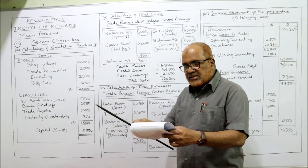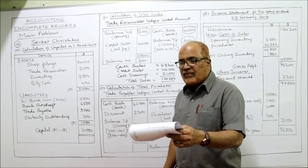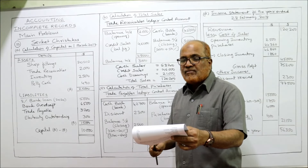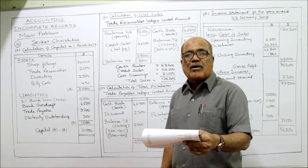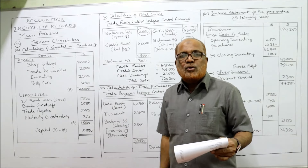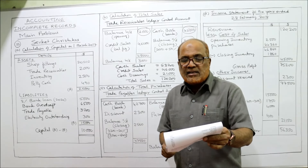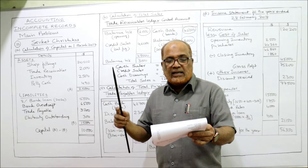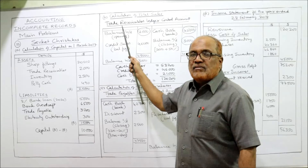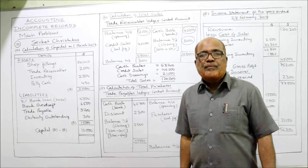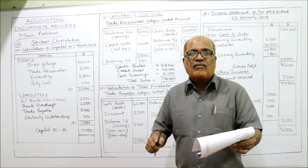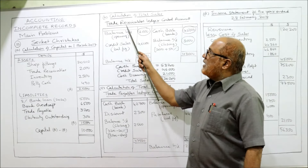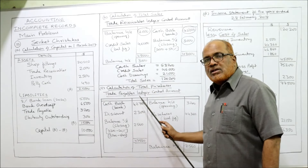Part C asks us to calculate total purchases for the year ended 28th February 2018. During the year, Sevket paid his suppliers $42,700 by check and received a cash discount of $2,300. The amount owed to credit suppliers on 28th February 2018 had decreased by 20 percent. The Trade Payable Account is prepared to find out the purchases.